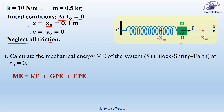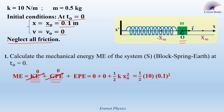KE₀ is equal to 0 since the block is released from rest, and the gravitational potential energy is 0 because G is at the reference level. So we still have the elastic potential energy: one half k x₀ squared. With k equal to 10 newtons per meter and x₀ equal to 0.1 meters, the answer is 0.05 joules.